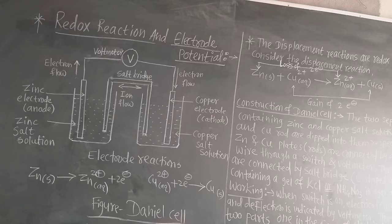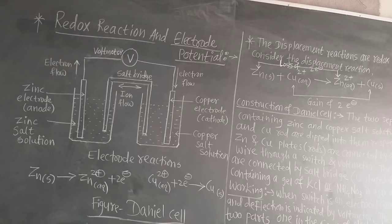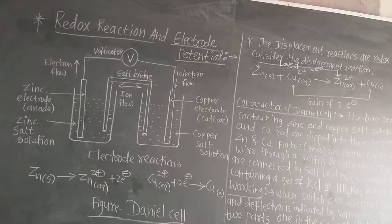If there is a solution of a less reactive element — such as copper sulphate solution in a container — and if we dip a zinc rod into that copper sulphate solution, zinc is the more reactive element than copper.